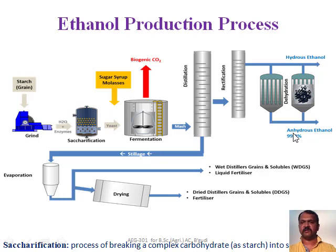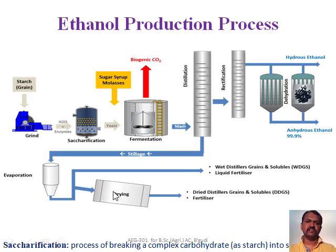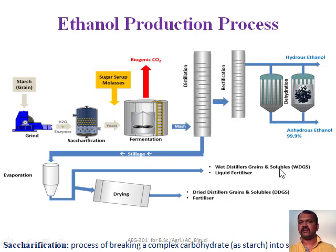In the rectification process, hydrous ethanol will be separated by doing dehydration of it, and anhydrous ethanol will be separated from the other end. So hydrous and anhydrous ethanol will be separated after doing the rectification of the distillation process in the ethanol production process. Whatever waste comes out during distillation is in the form of stillage. It will be evaporated and comes out as a liquid fertilizer. After drying that waste from the distillation process, we are getting dried distillers grains and solubles as solid fertilizer, and wet distillers grains and solubles as liquid fertilizer.